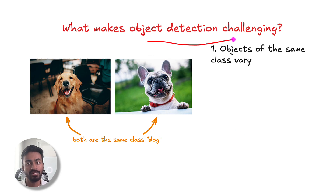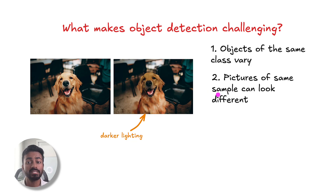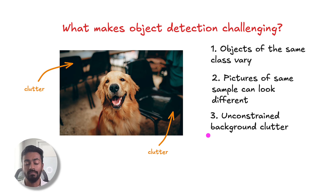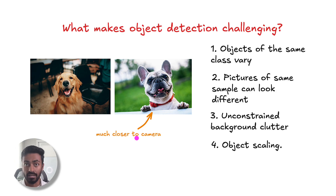Now what makes object detection so challenging? Well, there are a few things. For one, the objects of the same class can vary. Both of these are dogs, yet they are both very structurally different. Then the pictures of the same sample can look very different — for example, this is of a much darker shade than this image, even though they represent the same exact dog. We can also have unconstrained background clutter and object scaling, as some objects may be closer to the camera than others, yet they have to be recognized as the same object class. And for all of these reasons, object detection can be quite a challenging problem.